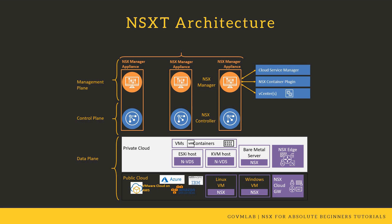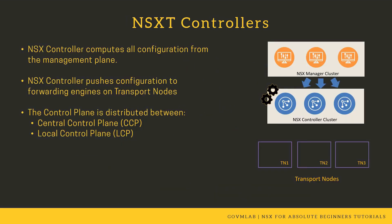In NSX-T architecture, instead of deploying three controller VMs and one NSX manager VM separately, three unified appliances get deployed in a three-node cluster to provide better resiliency, performance, and high availability. Every unified appliance has both management plane and control plane running inside it. NSX manager pushes all compute configuration to the NSX controller, and NSX controller pushes that configuration to the forwarding engines running on each of the transport nodes.